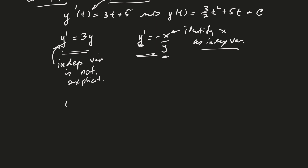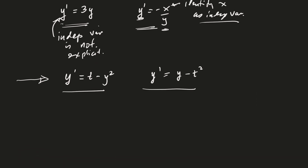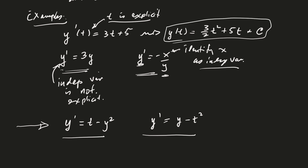Some more examples: y prime equals t minus y t squared — here the independent variable is t and the dependent variable is y. We might also have y prime equals y minus t squared. These two look very similar, but one is fairly easy and straightforward to solve while the other is very difficult. Remember, a solution to a differential equation is a function that satisfies the equation.